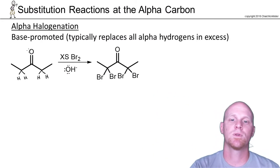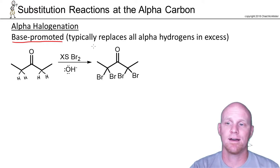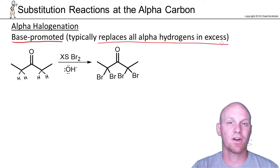Now alpha halogenation will also take place under a base-promoted mechanism, and we don't say base-catalyzed because the base actually gets consumed in this reaction, so it's not a catalyst. And generally, we can replace all the alpha hydrogens with excess. In fact, it's hard not to have this happen multiple times even if you try to just add one equivalent. So generally we just say add excess halogen and excess base and let it go as far as it's going to go.